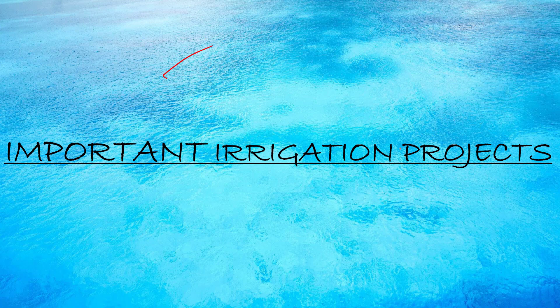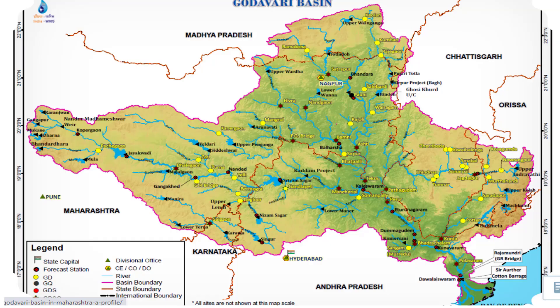Irrigation is the artificial supply of water to fields for farming, industrial activities, or agricultural activities. One TMC is a basic unit of reservoir capacity used in water allocation.